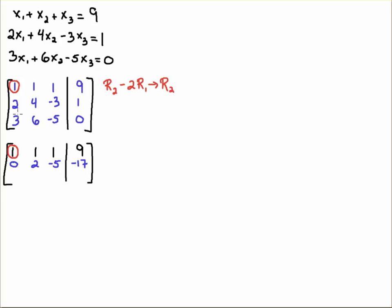Now I'm going to try to eliminate this 3 here with this 1, with this pivot. So I'll take R3 minus, so row 3 minus 3 times row 1, and I'll replace row 3 with that. So minus 3 plus 3 gives me a 0. That's what we're looking for. Minus 3 plus 6 gives us a 3. Minus 3 minus 5 is a minus 8. Minus 3 times 9 is a minus 27. Plus 0 is a minus 27. So we've eliminated these two entries here.